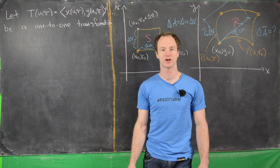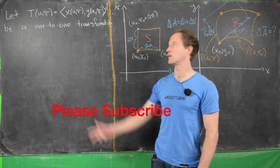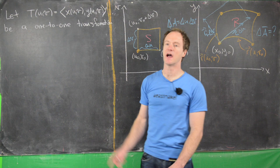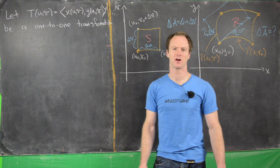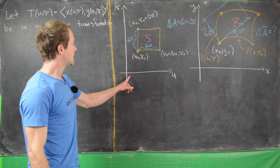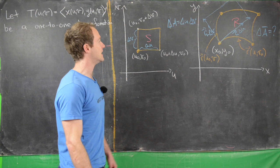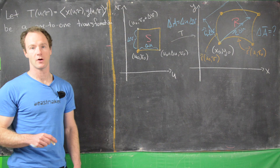Continuing on looking at one-to-one transformations of the plane, building towards a general formula for change of variables in multiple integrals, we want to look at the following. Let T of (u,v) be (x(u,v), y(u,v)). This is a transformation from the plane to the plane, where x and y are nice functions in terms of u and v. Here we have the uv-plane, over here we have the xy-plane, and our transformation T goes between them.